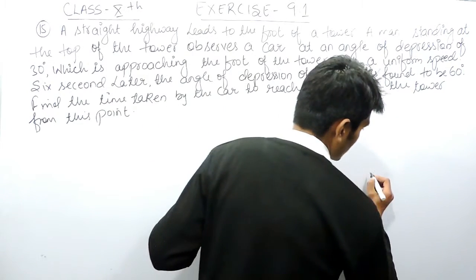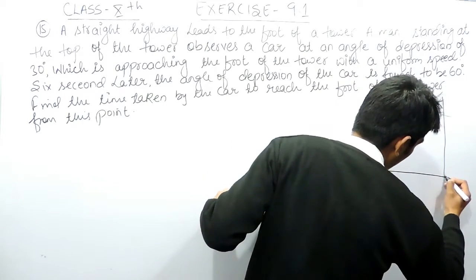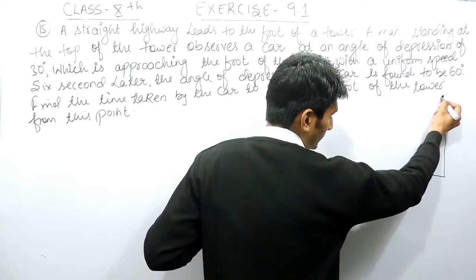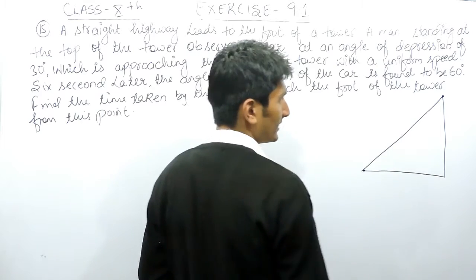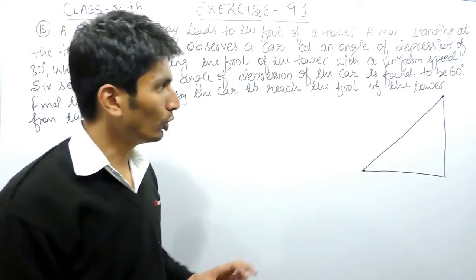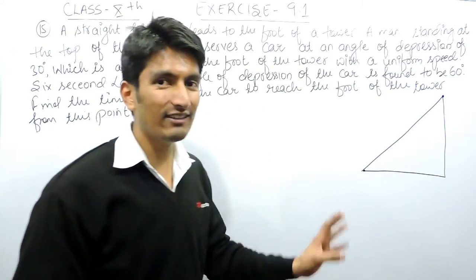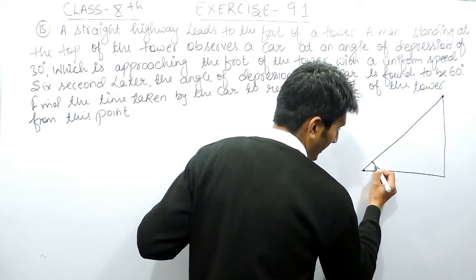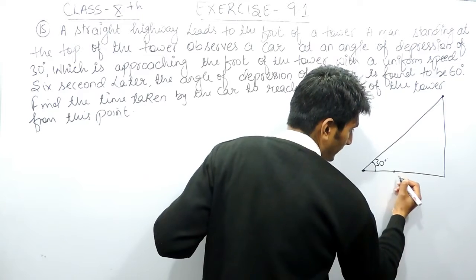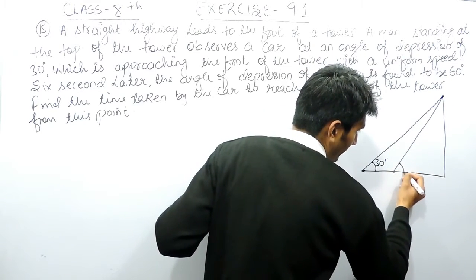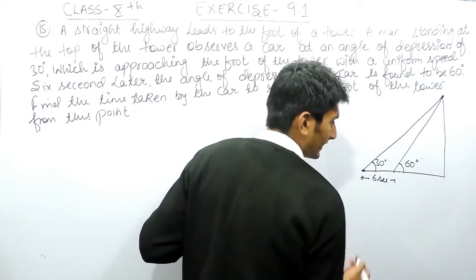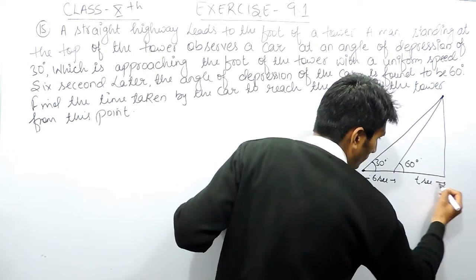The question says there is a straight highway which leads to a tower and a man is standing at the top of this tower. He sees the car and the angle of depression is 30 degrees. The angle of elevation and the angle of depression are the same, so you need to make the diagram according to the angle of elevation. If the angle of depression is 30, you can make it the angle of elevation as 30. Because this car is approaching toward the building, after six seconds when he sees the same car, the angle of elevation is 60 degrees.